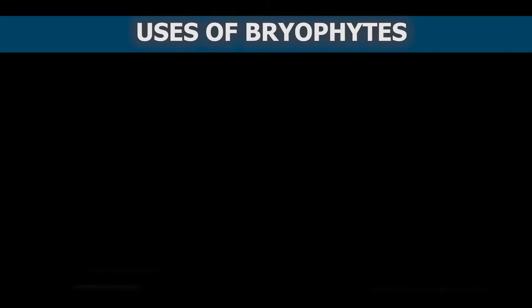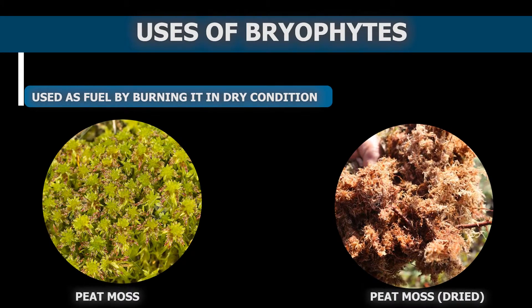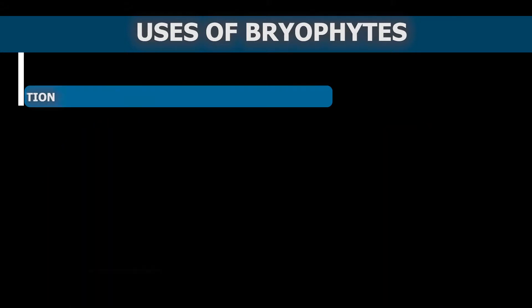Let's discuss a few uses of bryophytes. First, peat moss or sphagnum in dried condition is used as fuel — it is burned and the heat is used as energy.